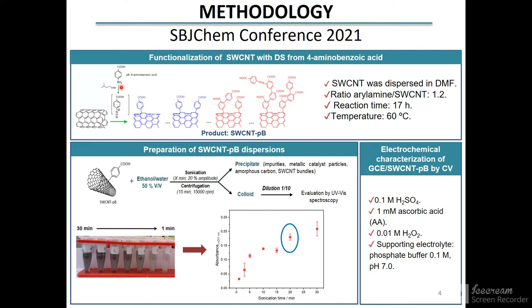For the functionalization, 4-aminobenzoic acid was added to single-walled carbon nanotubes dispersed in dimethylformamide with a ratio of arylamine to nanotubes of 1:2. Isoamyl nitrite was then added as a reductant to obtain the diazonium salt. The reaction was allowed to proceed for 17 hours at 60 degrees Celsius.